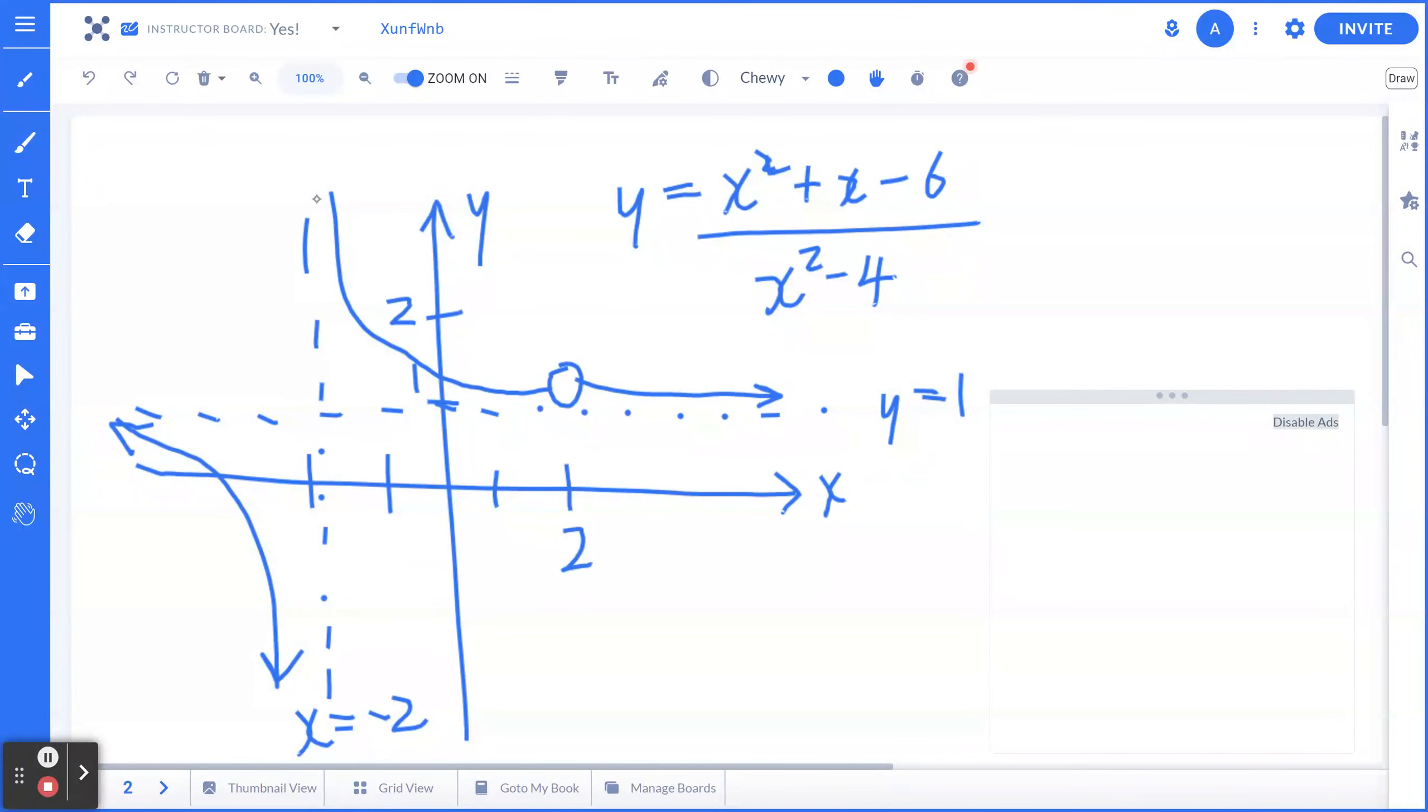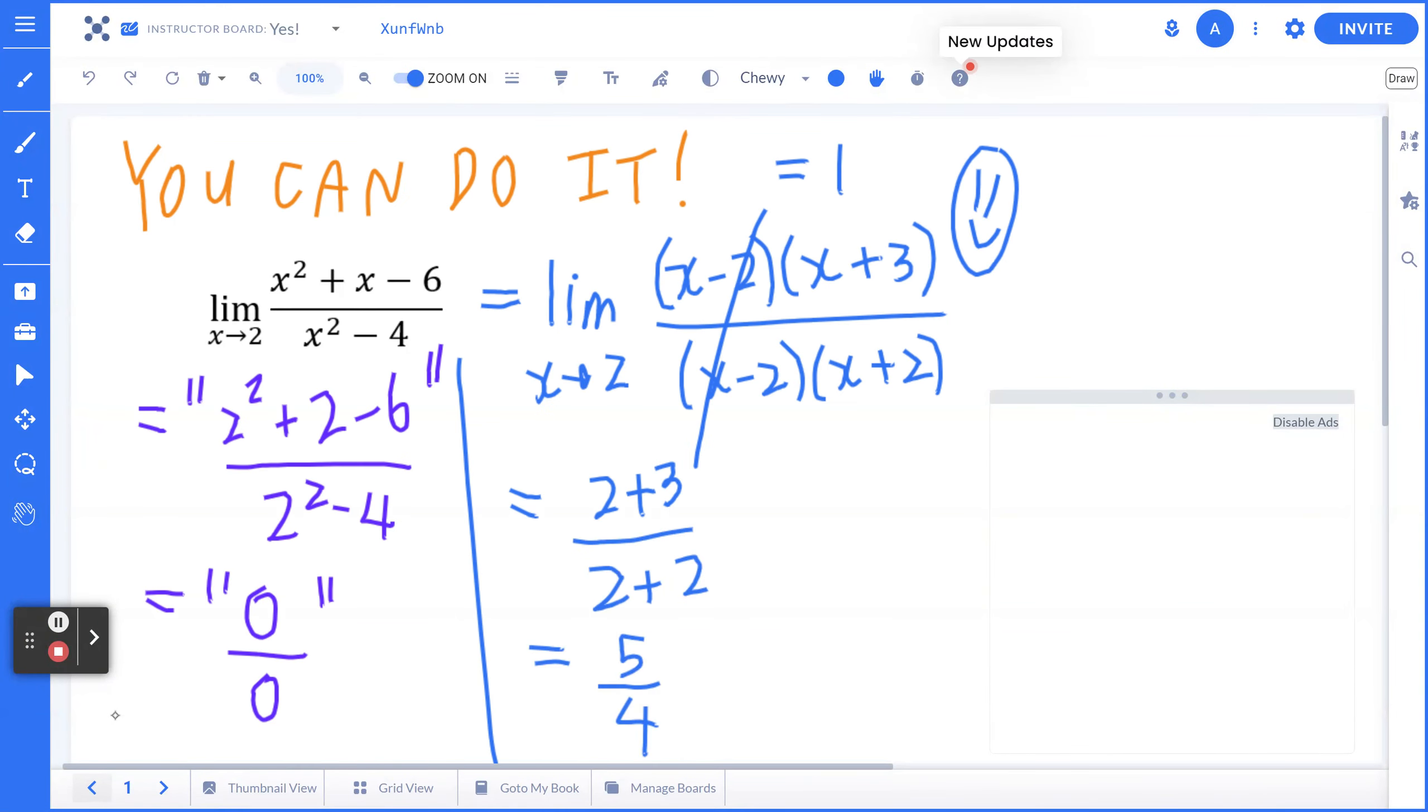The major focus is to be aware that there is a cavity or a hole located at 2 and 5 over 4. And again, when you find the left limit and the right limit as x is approaching to 2, you will discover the corresponding y value is going to be 5 divided by 4, which was exactly the answer we found from page number 1. I hope this makes sense.